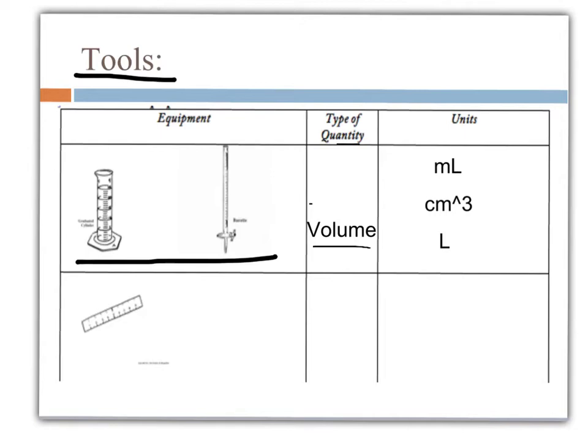Next, we have what appears to be a ruler, and that's exactly what it is. There's rulers, of course, measuring length. Examples of length include meters, centimeters, abbreviated cm, and kilometers, abbreviated km.